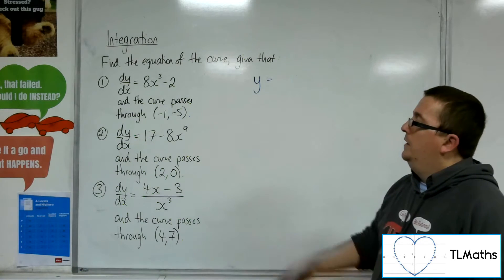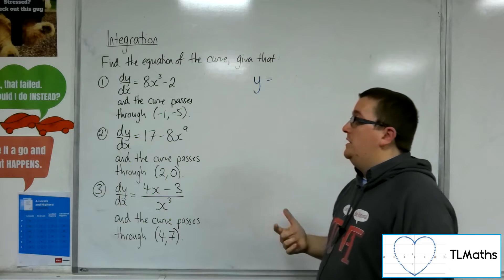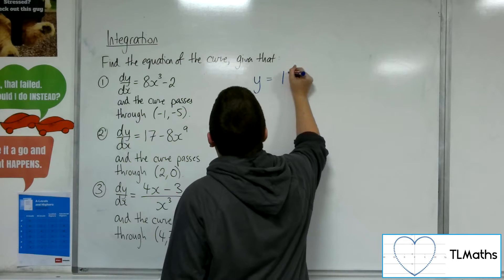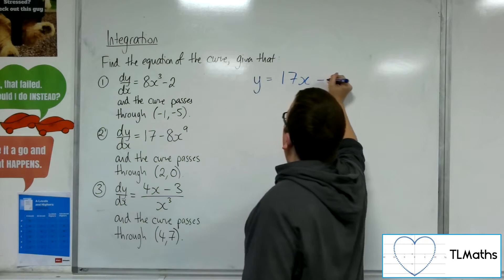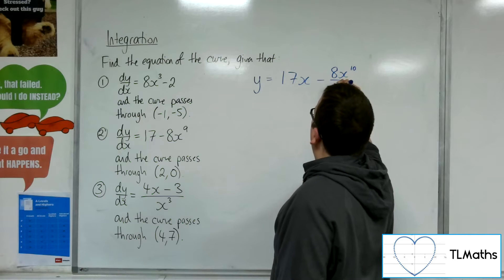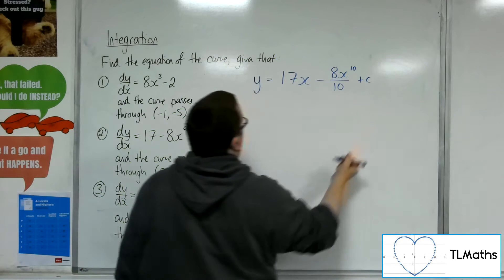Let's have a look at number 2. dy/dx is equal to 17 - 8x⁹. So, integrating, we're going to have 17x. Then we're going to add 1 to the power of the 8x⁹. So 8x¹⁰ divided by 10 plus the c constant of integration.